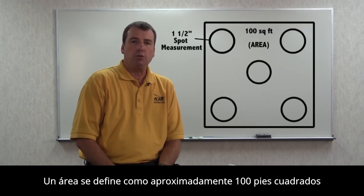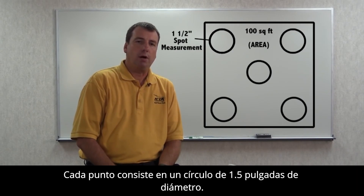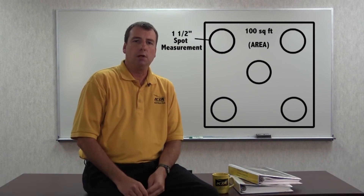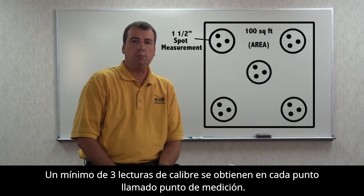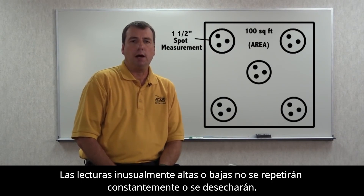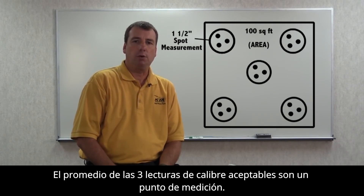An area is defined as approximately 100 square feet. Within each area, five arbitrarily spaced spots are selected, each consisting of a one and a half inch diameter circle. A minimum of three gauge readings are obtained in each spot. Unusually high or low gauge readings that cannot be repeated consistently are discarded. The average of the three acceptable gauge readings is a spot measurement.